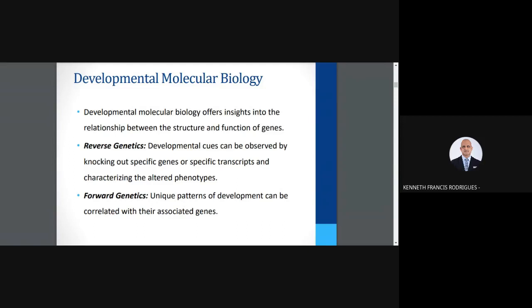We have two basic principles: reverse genetics and forward genetics. In reverse genetics, we look at developmental cues and observe them by knocking out specific genes or transcripts and characterizing the altered phenotypes — essentially a researcher looks at a set of genes, assuming the genome has been fully sequenced, knocks out specific genes, and looks for phenotypic changes. In forward genetics, we look at the phenotype first for unique patterns of development and correlate them to their associated genes. Both are important tools in molecular and developmental biology.